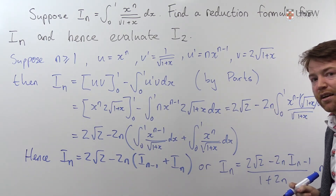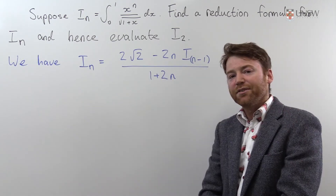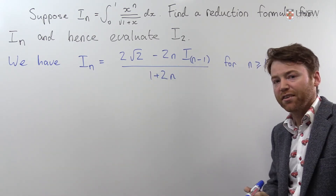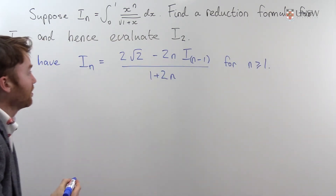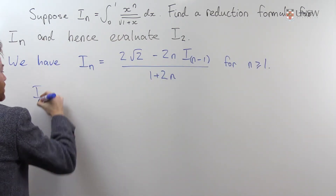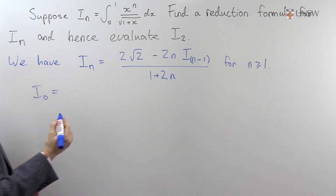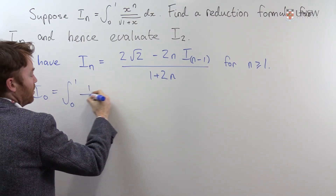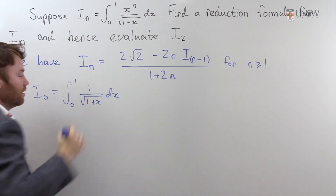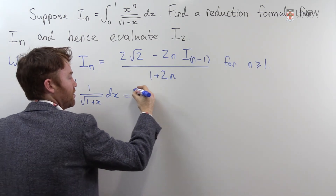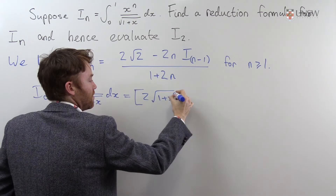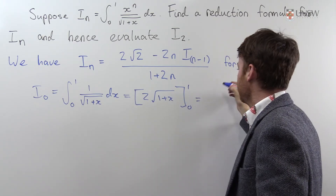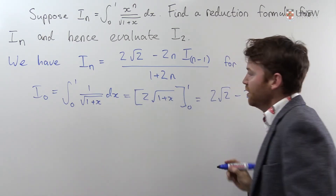Let's use this reduction formula to evaluate I2. The reduction formula only works for n greater than or equal to 1, so we need a starting point — typically I0 or I1, depending on the question. Here I0 is easy to evaluate: I0 is the integral from 0 to 1 of 1 on square root of 1 plus x dx, which equals 2 root 1 plus x evaluated from 0 to 1, giving 2 root 2 minus 2.